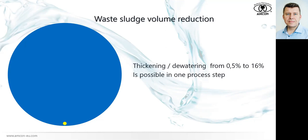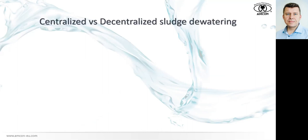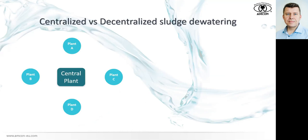Now let's talk about the difference between centralized and decentralized sludge dewatering. In the centralized scenario, we have wastewater treatment plants in different villages, cities, and towns, all sending their waste activated sludge to a central plant — usually next to a big city — where large installations like belt presses or centrifuges are installed. Due to high operating costs, they need to handle huge amounts of sludge to split the cost per cubic meter to a reasonable level.